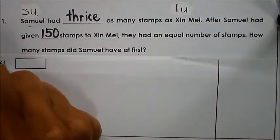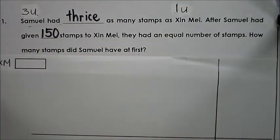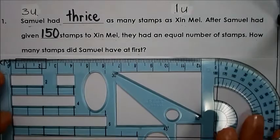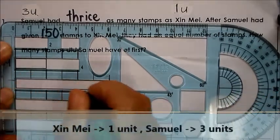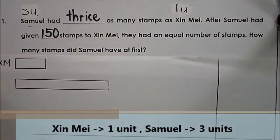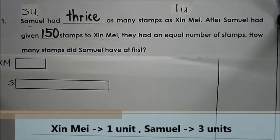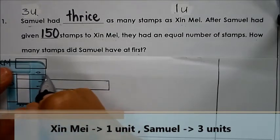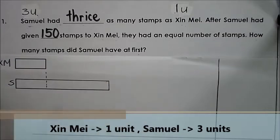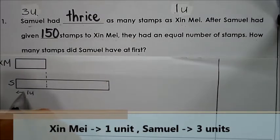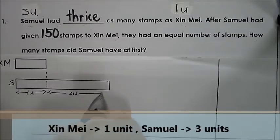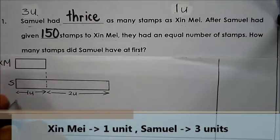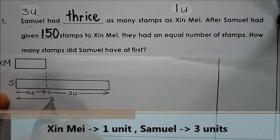I'm going to draw a model to show that Singmay has one unit and Samuel had three units. So I draw a line down — this is one unit here, and here would be two units, because Singmay has one unit and Samuel actually has three units altogether.